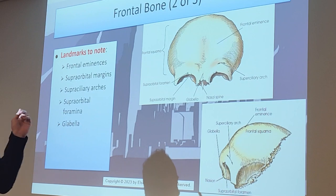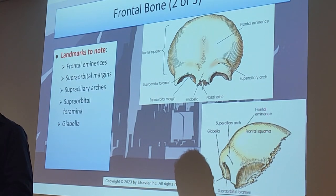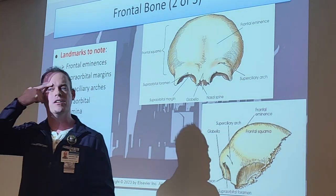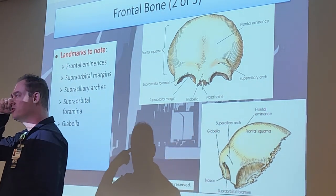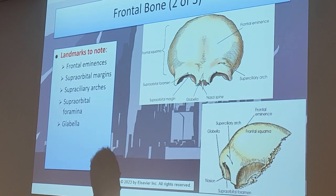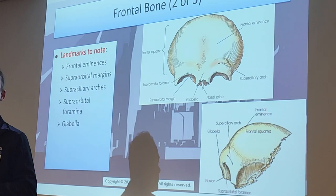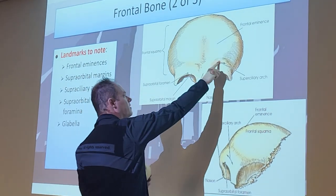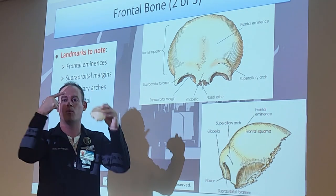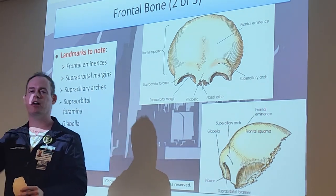After the supraorbital margin, we have the supra-ciliary arch - that is where your eyebrows sit on. If you palpate your eyebrows, you can feel that arch. Those are the supra-ciliary arches, found right here on the frontal bone.